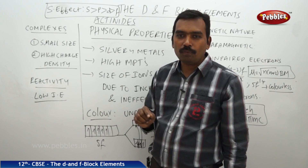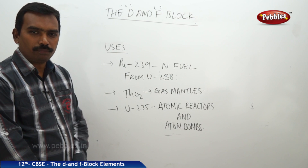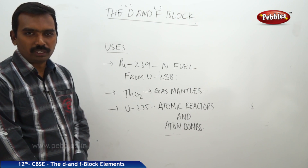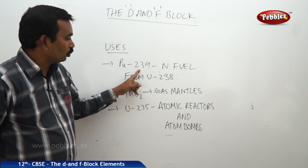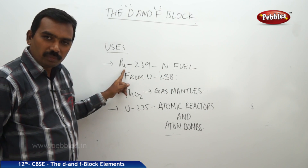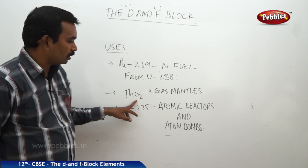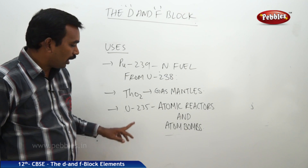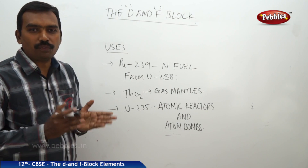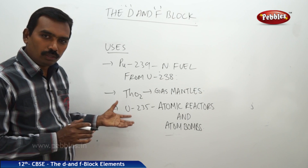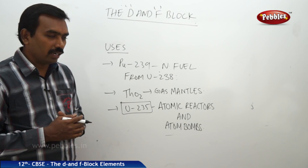Now the uses of actinides: they are used in many purposes in daily life, particularly in nuclear reactors. Plutonium-239 is used as a nuclear fuel, obtained from uranium-238 during radioactive disintegration. Thorium dioxide is used in gas mantles. Uranium-235 is used in atom bombs and nuclear reactors for nuclear fission and fusion reactions. These elements are valuable for the progress of the country and nation.